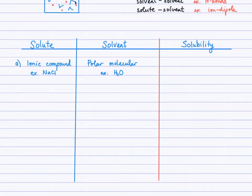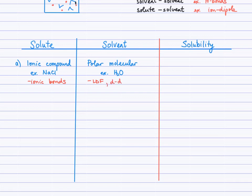We'll set up a T-chart here to track the different types of solutes and solvents and their relative solubilities. When you consider an ionic compound — for example, NaCl — think of the types of attractions that occur between ions in the ionic compound. Hopefully you're thinking of ionic bonds. A polar molecular solvent will have the ability to have London forces, possibly dipole-dipole, or as in the case of water, even the ability to hydrogen bond.